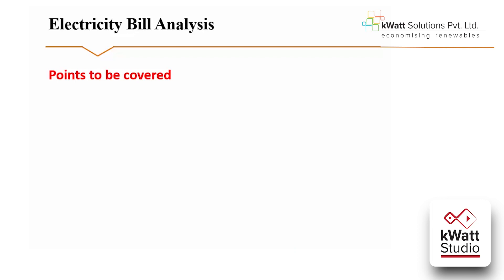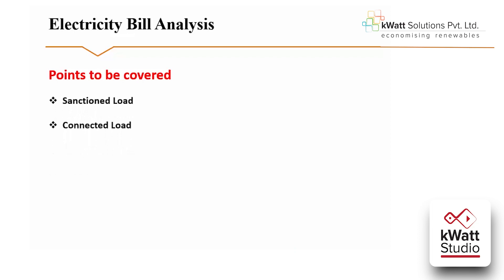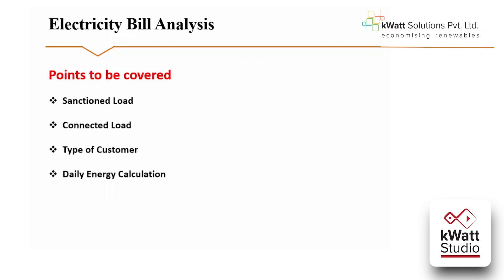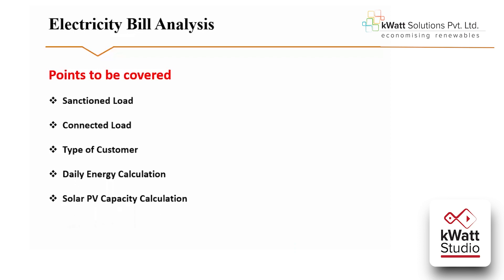Module 1 is Electricity Bill Analysis. In this module, we will learn how to read an electricity bill because electricity bill plays a very vital role while deciding the PV plant capacity. We will see what is sanctioned load, what is connected load, and what is the type and category of the customer. We will also learn how to calculate daily energy requirement and solar plant capacity.